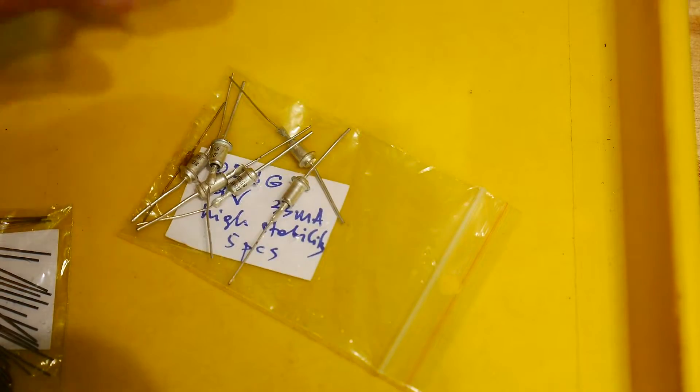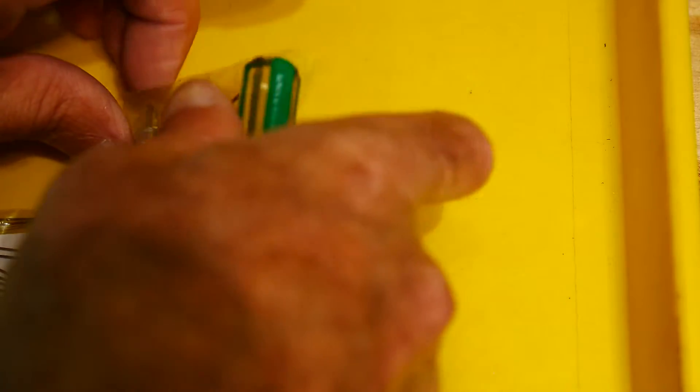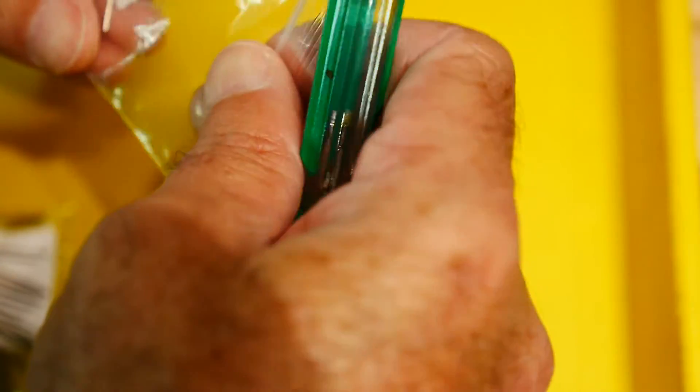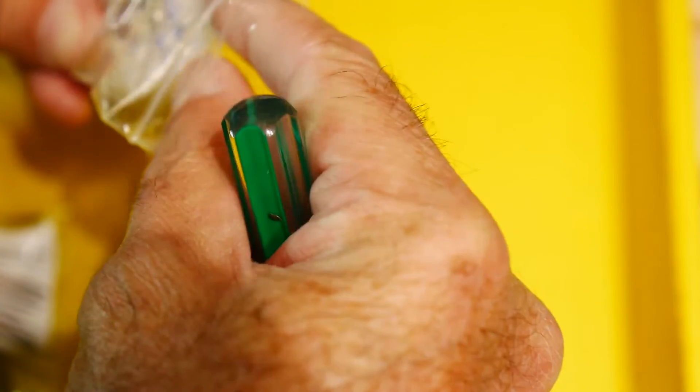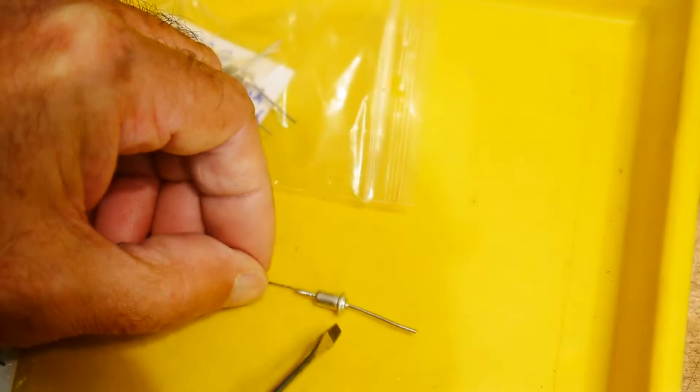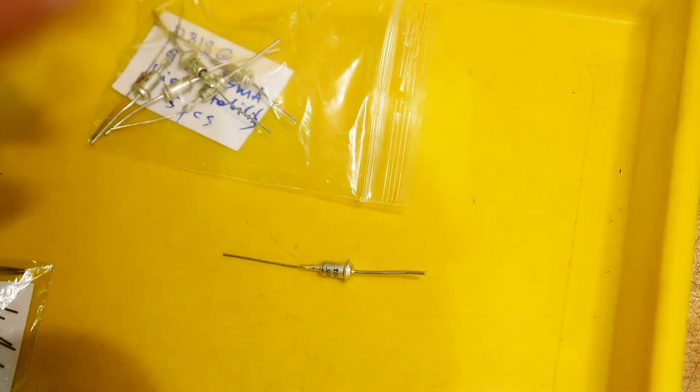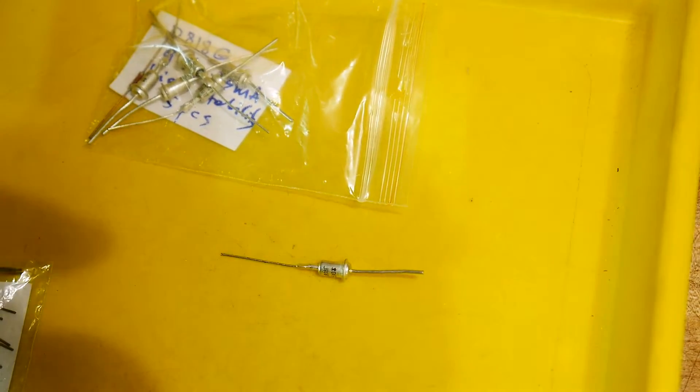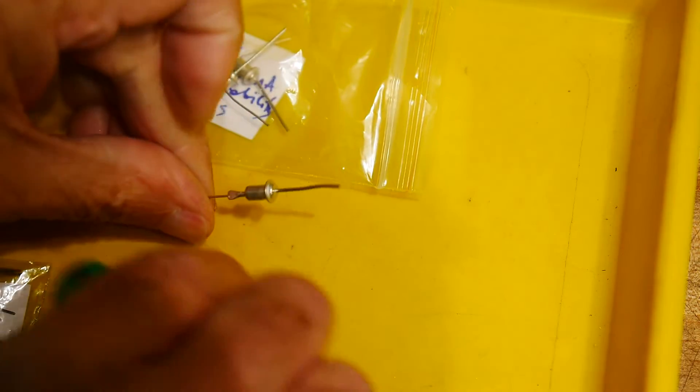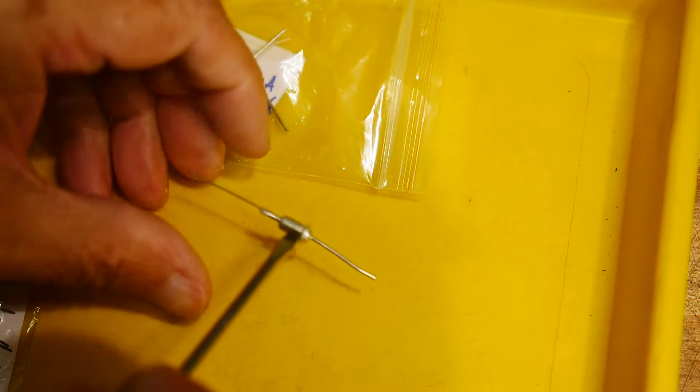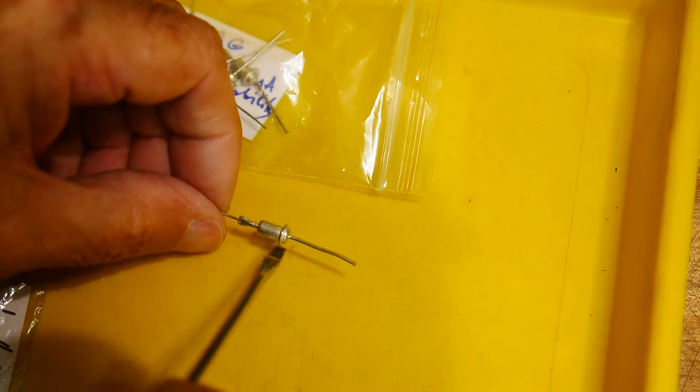The final thing I got which I thought were interesting are some zener diodes. These look pretty high wattage, I like the package, the package is really cool. Sometimes you see this package with a heat sink on it. Oh, and it's magnetic too, it's steel, interesting.